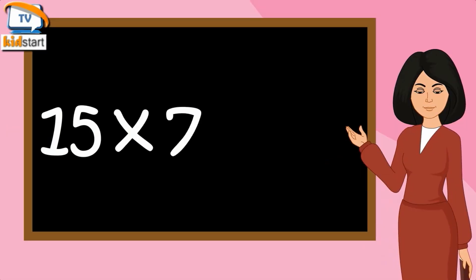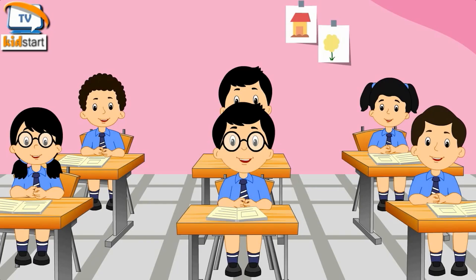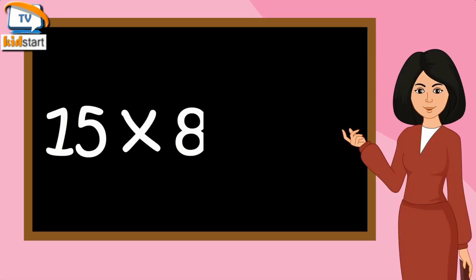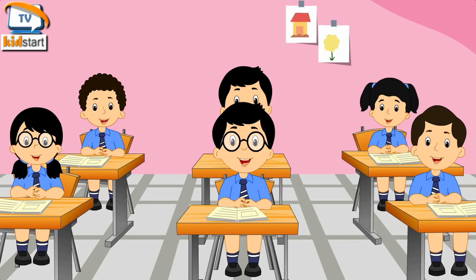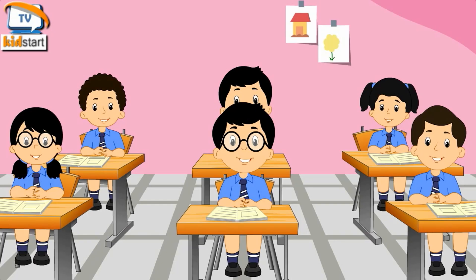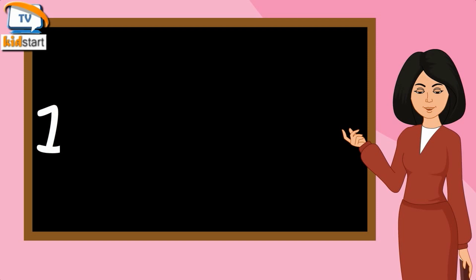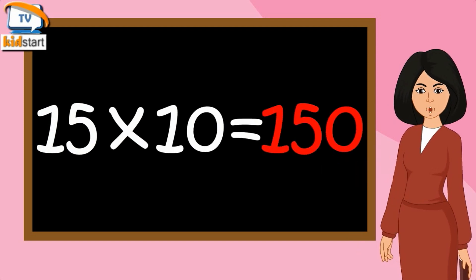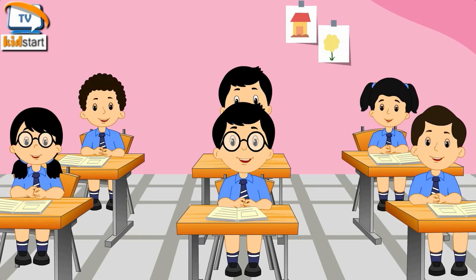Fifteen sevens are one hundred five. Fifteen eights are one hundred twenty. Fifteen nines are one hundred thirty-five. Fifteen tens are one hundred fifty.